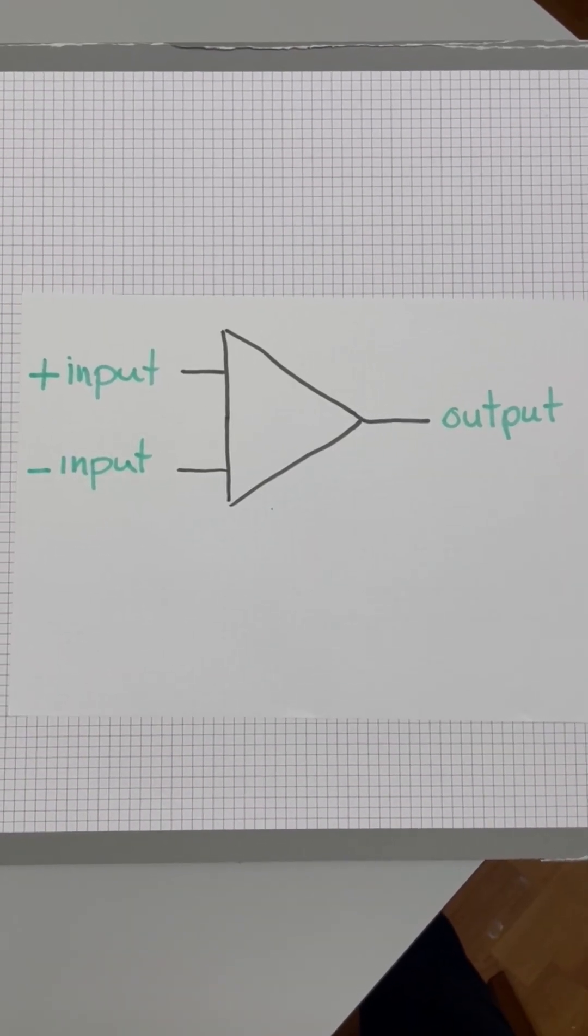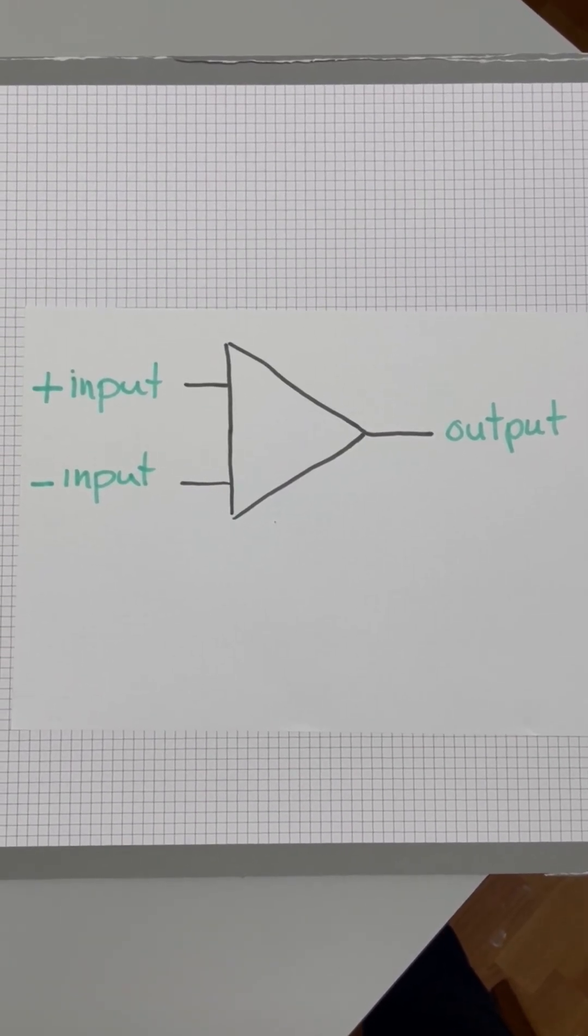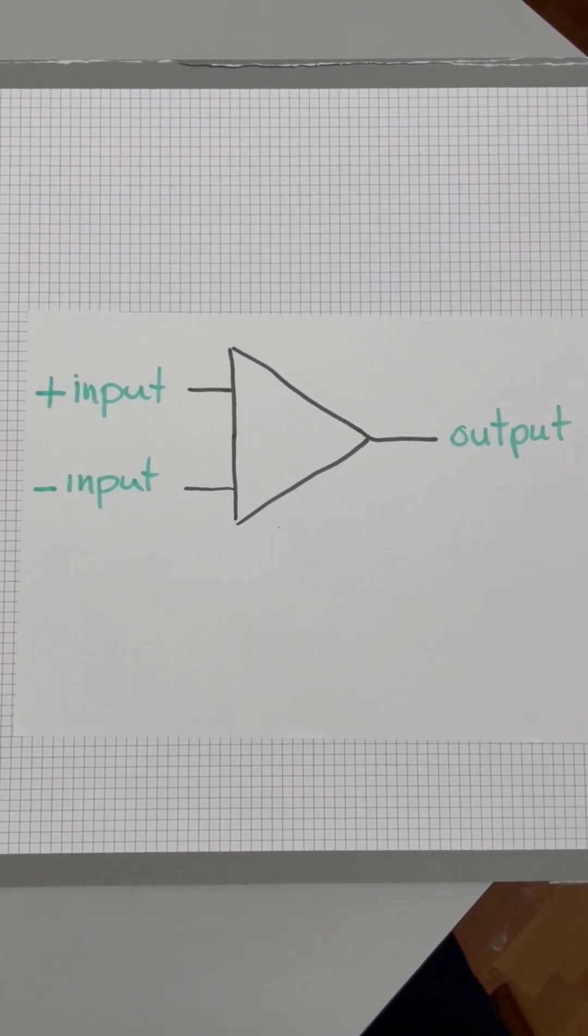An op-amp is a circuit that has two inputs and one output, and that output changes based on what these two inputs are seeing.